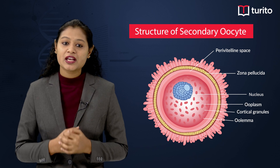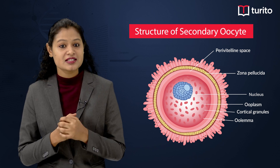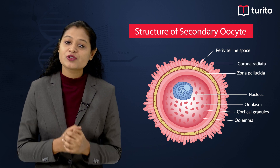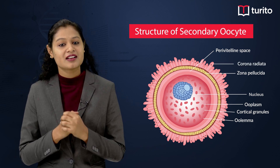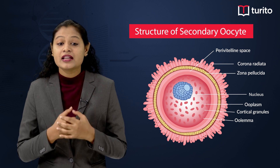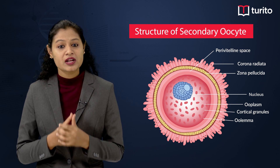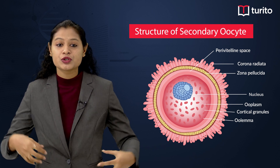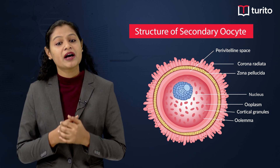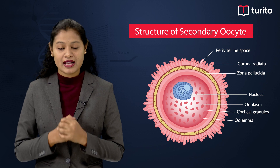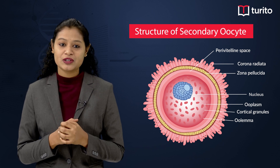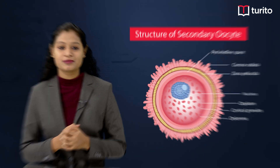Next we have radiating cells called the corona radiata cells. These corona radiata cells are glued together by hyaluronic acid. So this is the structure of the secondary oocyte.